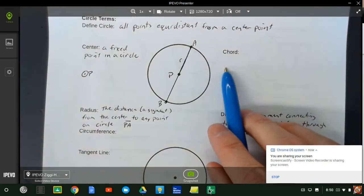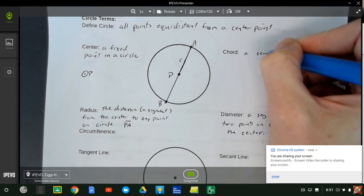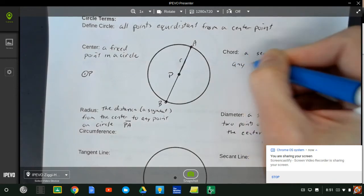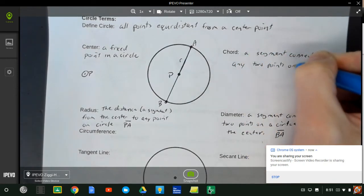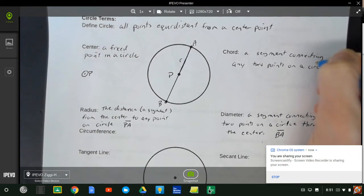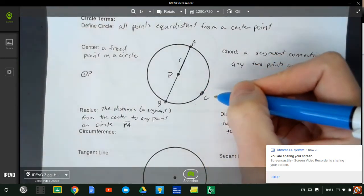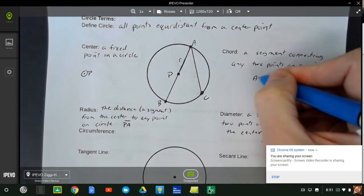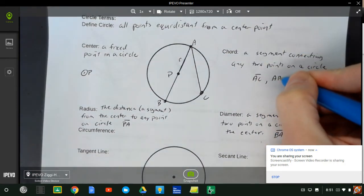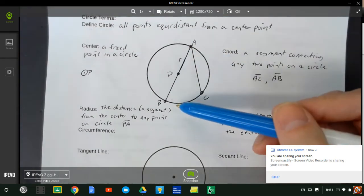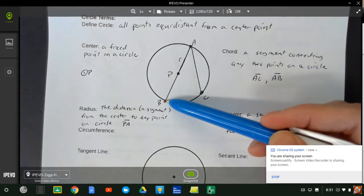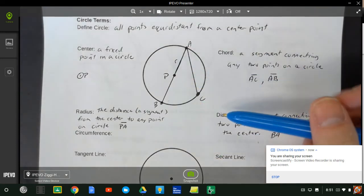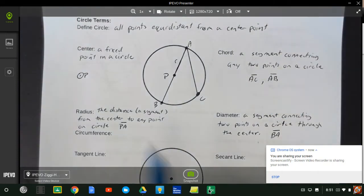Now we do have this other term, chord. A chord is a segment connecting any two points on a circle. So if I had another point on my circle, point C, my chord is connecting A to C. So AC is one chord, but AB is also a chord. So a diameter is a special kind of chord, because it connects two points on the circle, but the diameter is special because it goes through the center. Any other chord is just going to connect two points and doesn't do anything exciting right now.